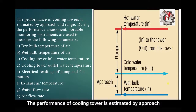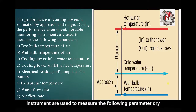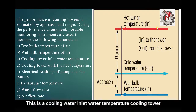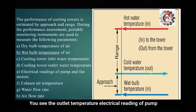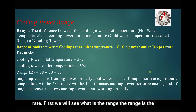The performance of a cooling tower is estimated by approach and range. During performance assessment, portable monitoring instruments are used to measure the following parameters: dry bulb temperature of air, wet bulb temperature of air, cooling tower inlet water temperature, cooling tower outlet temperature, electrical readings of pump and fan, exhaust air temperature, water flow rate, and air flow rate.